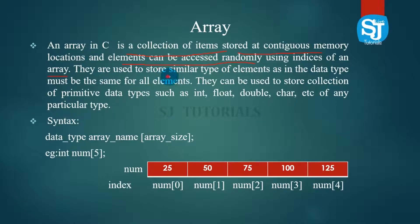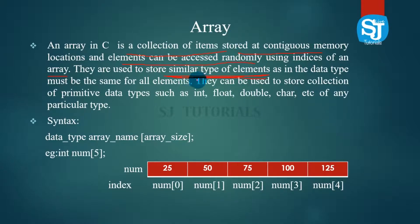Arrays are used to store similar types of elements — that is the main point, our data stores similar types. Integer values, floating point values, and characters can all be stored in an array. They can be used to store a collection of primitive datatypes.